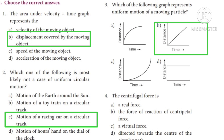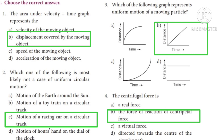Fourth question: The centrifugal force is — Option A: a real force, Option B: the force of reaction of centripetal force, Option C: a virtual force, Option D: directed towards the centre of the circular path. The correct answer is Option B — the force of reaction of centripetal force.